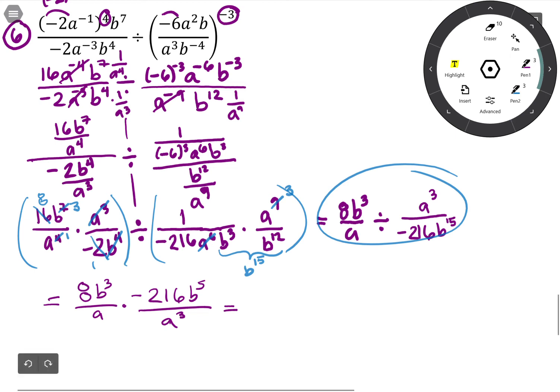I don't know if I know what 8 times -216 is, so I'm going to be lazy: -8 times 216. But I am going to go ahead and combine: b cubed times b to the 15 is b to the 18, and a times a cubed is a to the 4. So if you have a calculator handy, figure out what 8 times 216 is. I'm going to be lazy and leave it.